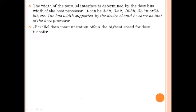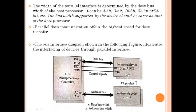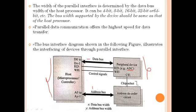Parallel data communication offers the highest speed for data transfer between the host processor and peripheral devices. The bus interface diagram illustrates interfacing through the parallel interface: the host processor/controller is connected in parallel with peripheral devices such as an ADC. The data bus is directly connected to the data bus pins of the peripheral device, along with read/write lines and address bus lines (A0 to Ay) decoded through an address decoder circuit. In the next video, we will see the next part of this module.